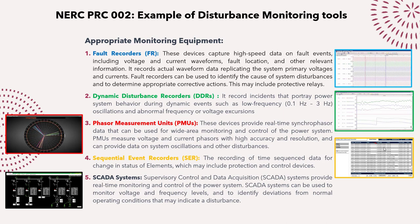The sequential event recorder captures tight-sequence time-stamped data for changing status of elements, including protection and control devices such as isolators, breakers, main-1 protection, main-2 protection, or other protection systems. The SCADA system — supervisory control and data acquisition — has a slightly slower data storage rate compared to the faster devices. It provides real-time monitoring and control of the power system and can be used to monitor voltage and frequency levels, identifying deviations from normal operating conditions that may indicate disturbances.